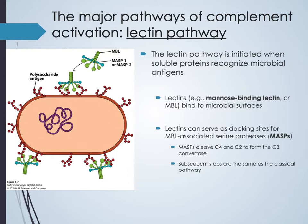Comparing classical and lectin pathways: the initiating recognition step is different — antibody-antigen binding versus lectin-carbohydrate binding — but structurally, the complexes look similar. Once downstream complement proteins C4 and C2 are activated and C3 convertase forms, the steps converge. C3B formation leads to C3 convertase, then C5 convertase, and potentially the membrane attack complex.